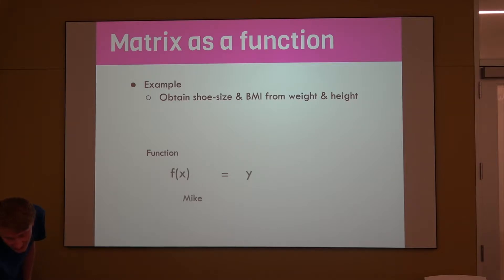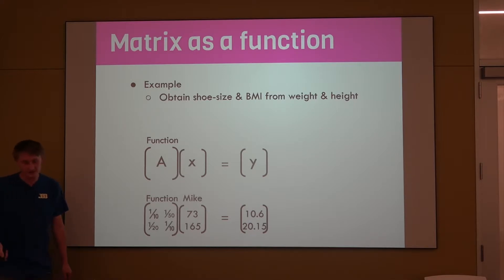From here, we see that we do have some way to interpret a matrix as essentially a function. We can think about this as an f of x equals y type of thing. We had x, Mike, and we applied some function to Mike, and we got y, the shoe size and BMI. How we're actually going to show this in linear algebra or matrix notation is going to be as A times x equals y. So instead of writing this as f of x equals y, we can say we're going to take some linear function A, apply it to x or Mike, and we're going to get y, the BMI and shoe size.